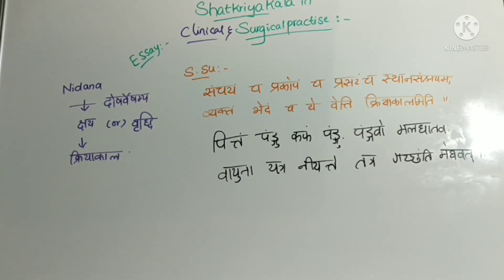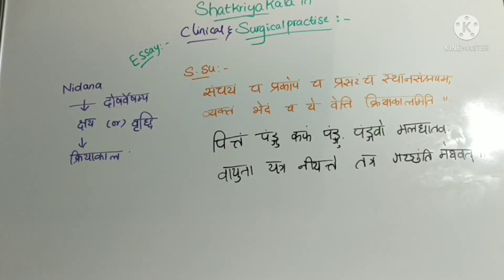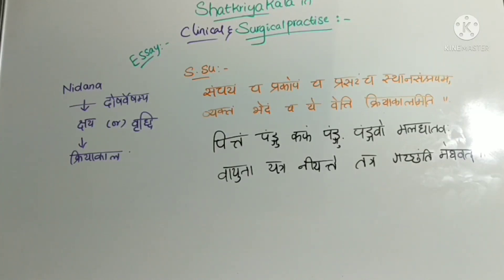In the Prasaravastha, that is the spreading stage, the relevant shloka is: Pitta Pangu, Kafam Pangu, O Maladatava, Vayunayatraniyanthe, Tatra Gatchanthi Megavar. The explanation is: Pitta and Kapha are Pangu — meaning unable to move on their own. If Vayu carries them, Pitta and Kapha will be able to move. Just like clouds carry rain, in the same way Vayu will carry Pitta and Kapha throughout the human body.